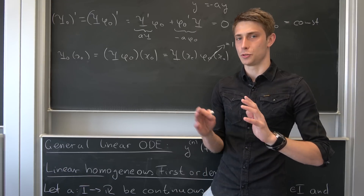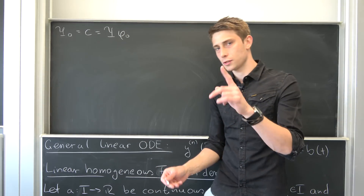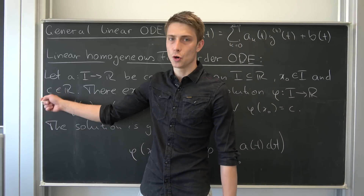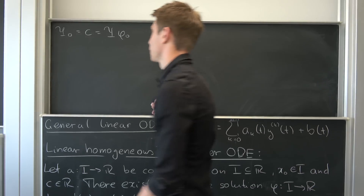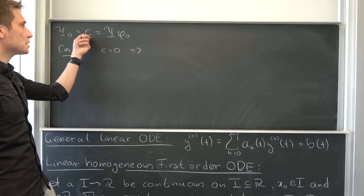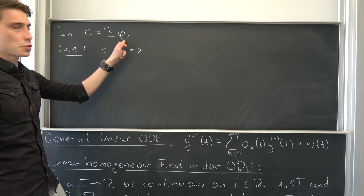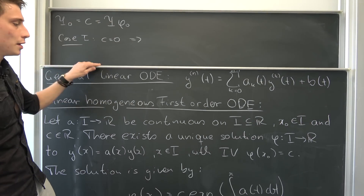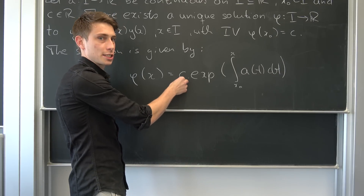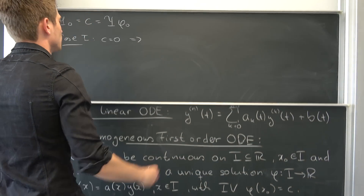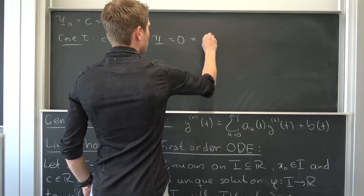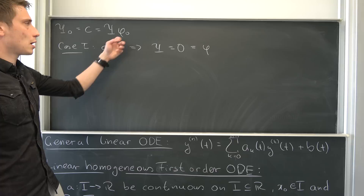Now let's study this constant further. Since c is a real number, it's either zero or non-zero. Case one: c = 0. That means the product ψ · φ₀ = 0, so one of them must be zero. Since ψ is a solution expressed in the given form with c = 0, ψ is exactly zero, and so is φ — so ψ = 0 = φ. Importantly, this also means φ₀ is not equal to zero.